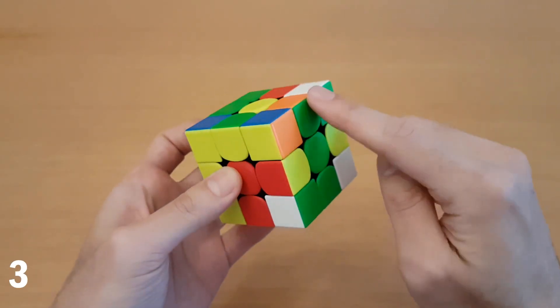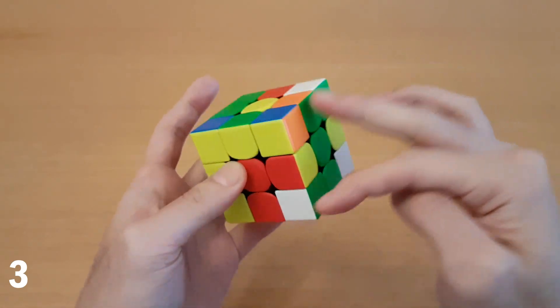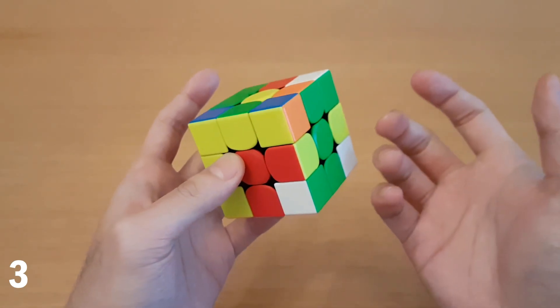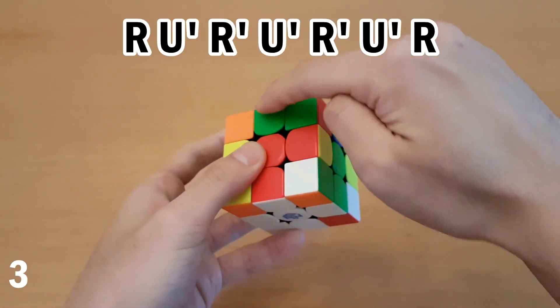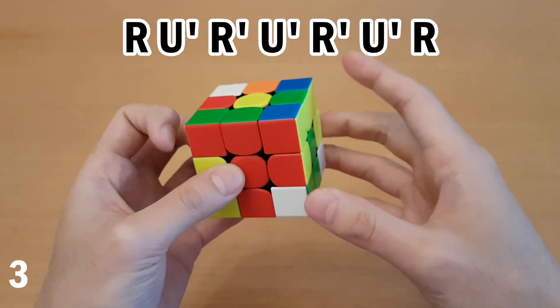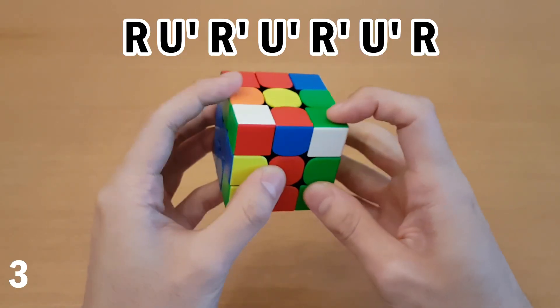The next one is this pair right here, where this edge is correctly oriented. And this isn't anything too special, but I do see a lot of people do this wrong, where they will rotate and pair them up like this. The correct way to do this pair is to put this edge at the back, and then do R U prime R prime, and that sets them up.